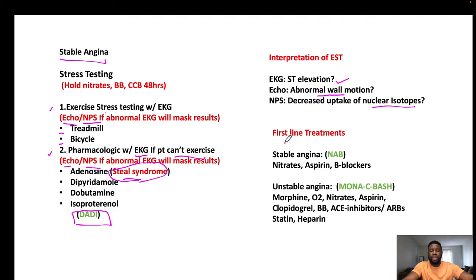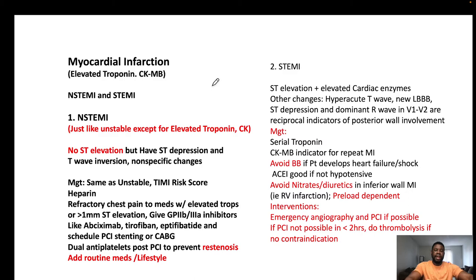First-line treatment for stable angina: nitrates, aspirin, and beta blockers — mnemonic NAB. For unstable angina, the mnemonic is MONARCH C BATCH: Morphine, Oxygen, Nitrates, Aspirin, Clopidogrel, Beta blockers, ACE inhibitors or ARB, Statins, and Heparin.